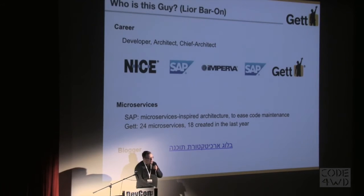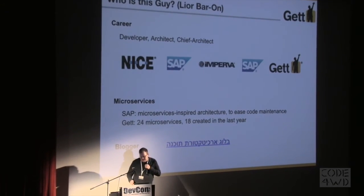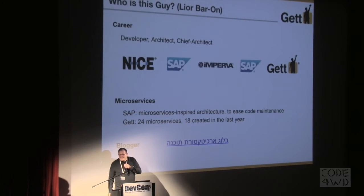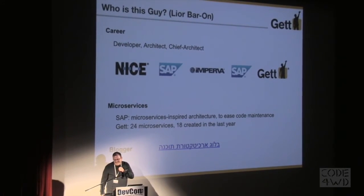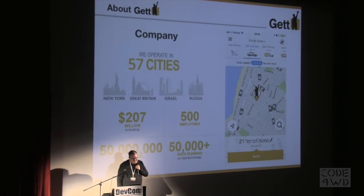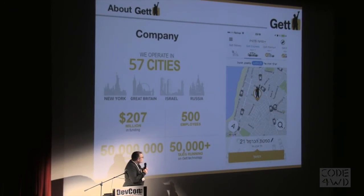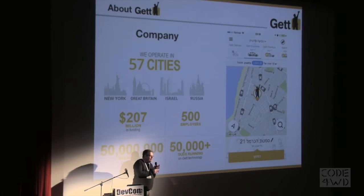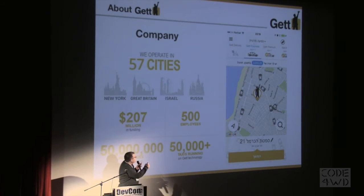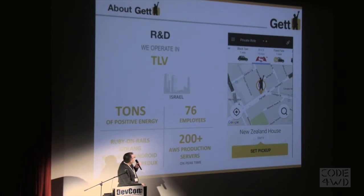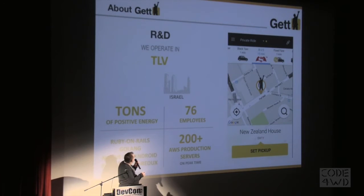A word or two about Gett: if you know, Gett is what was previously formerly known as Gett Taxi. It's an application that helps connect suppliers and passengers. It started with taxis but now we're doing a bunch of other stuff. We work in four countries across the world, we have R&D here in Israel in Tel Aviv, we have 76 employees, we have a lot of fun and a lot of challenges.